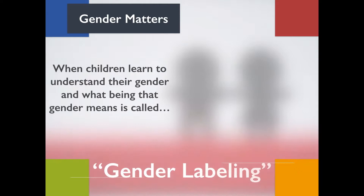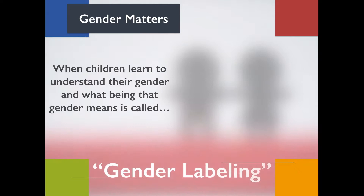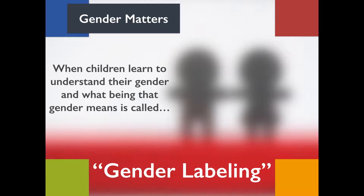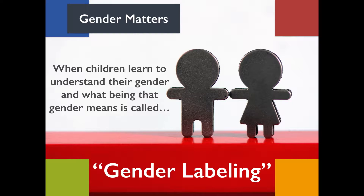Psychologist Lawrence Kohlberg, best known for his theory of stages of moral development, theorized gender identity developmental stages in young children. He believed that during the early preschool years, young children engage in what is called gender labeling — they learn to understand their gender and what being that gender means in their everyday life.